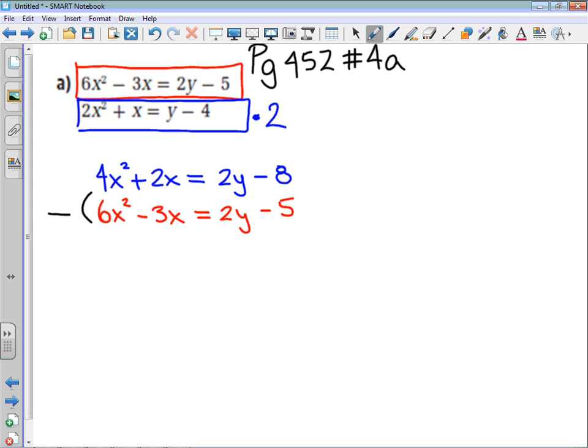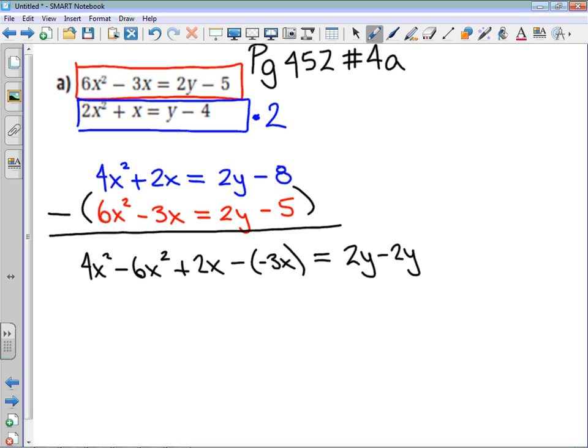So what I'm going to do is I'm going to subtract that red equation from the blue equation, and we're just going to work through this term by term. I'm going to write it out for this one, and then I probably won't for the next example. So what this is going to look like is 4x squared minus 6x squared plus 2x, and I'm going to be really, really diligent here, and I'm going to put minus negative 3x. That is typically where the algebra goes a little bit south for students here, and then my right-hand side is going to be 2y minus 2y, and then minus 8 minus negative 5.